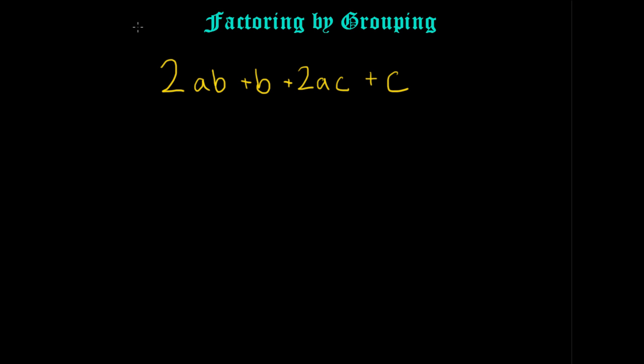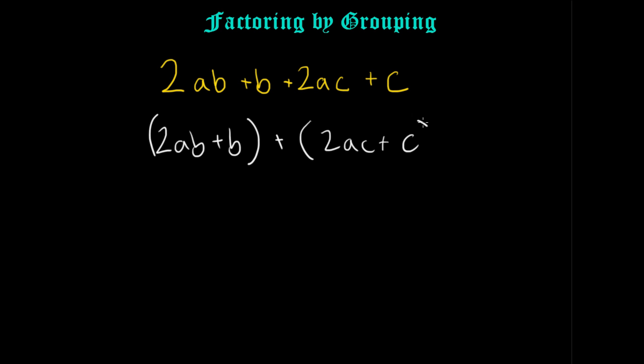So let's go ahead and begin with this first problem. We have 2AB plus B plus 2AC plus C. For the first step, we're going to group the terms containing B and the terms containing C. Those are pretty well grouped already — you've got your C's on the right and your B's on the left. So let's group them and write them in parentheses. That's the grouping aspect of it.